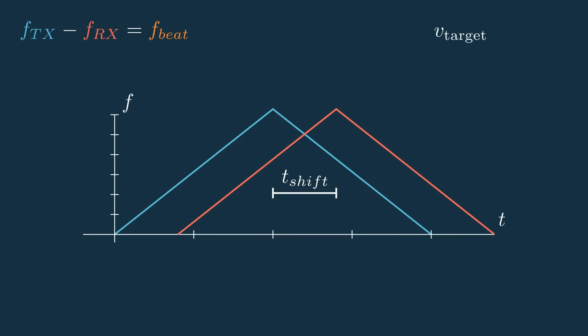But then, due to the target's velocity, it would be shifted down if the target is moving away from the radar and up if the target is moving towards the radar. And this shift is known as the Doppler frequency, or fd.